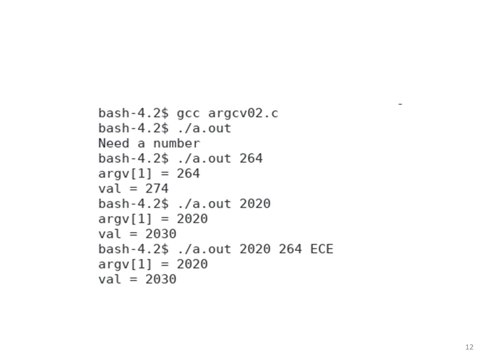If we give 2020, the program prints the string argv[1] as a string of 2020. Val is 2030. We can give more arguments. The program takes only argv[1] and ignores the additional arguments.